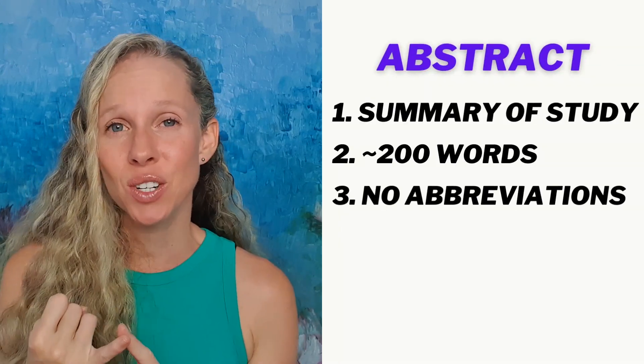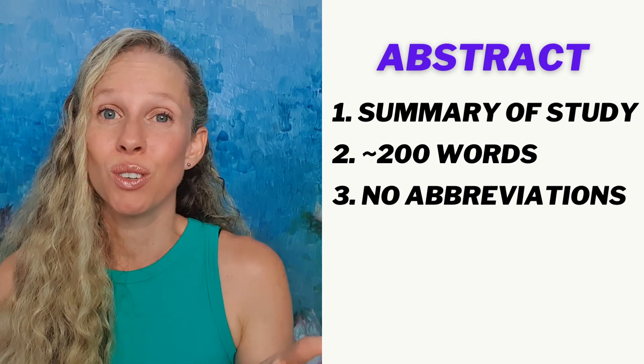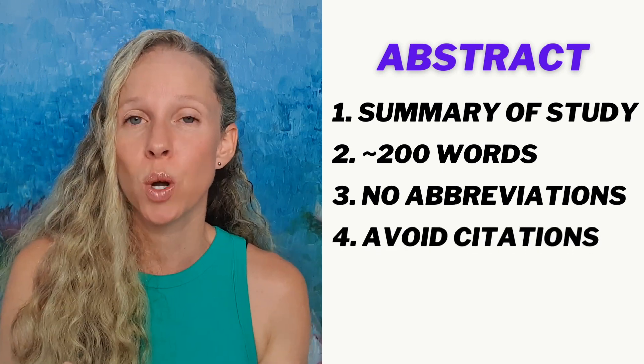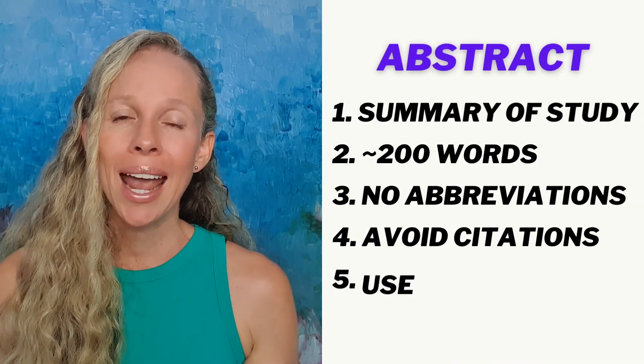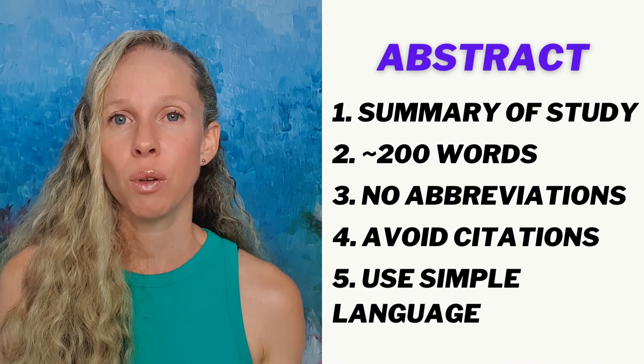A few other keys to writing a great abstract: avoid abbreviations, avoid citations unless your study is based on somebody else's work — in which case you can cite them, but try to limit it to only one citation — and use no technical jargon. Remember anybody should be able to pick up your scientific report, read your abstract and understand it no matter what discipline they're in.